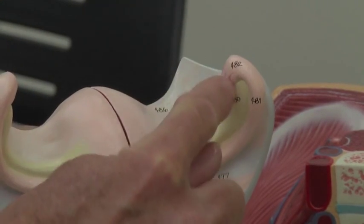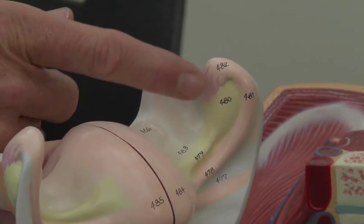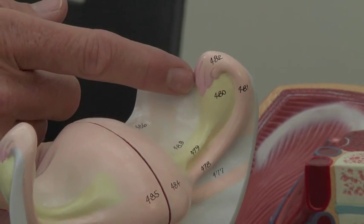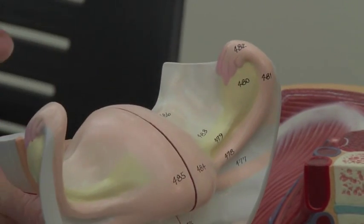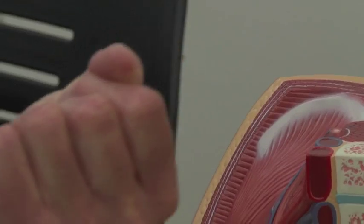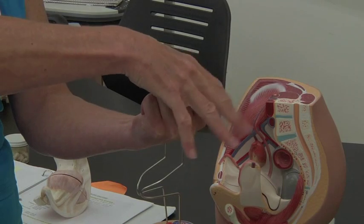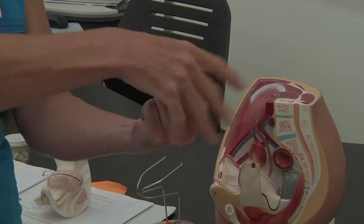That whole end right there is called the infundibulum, and then these little finger-like projections coming off the infundibulum are going to be known as fimbria. The infundibulum comes and surrounds the ovary and these fimbria, the finger-like projections, will kind of wave.